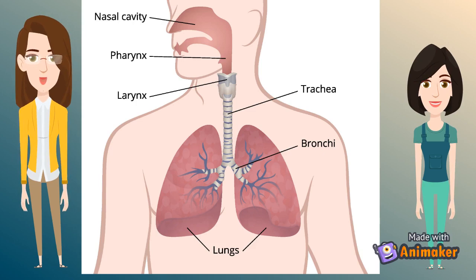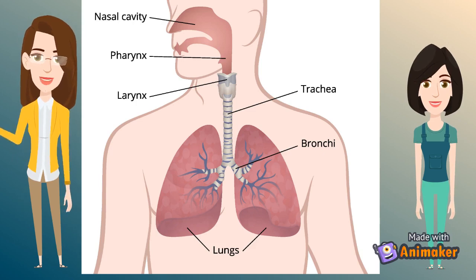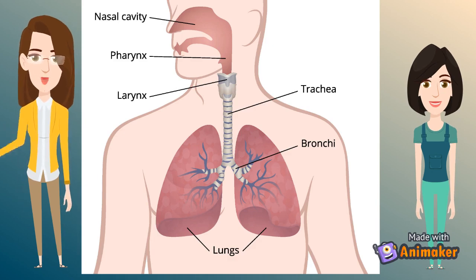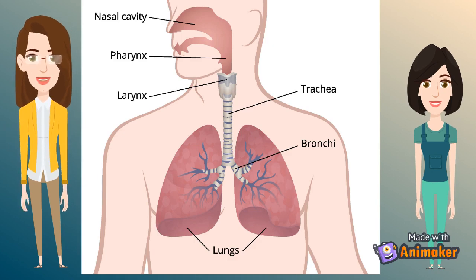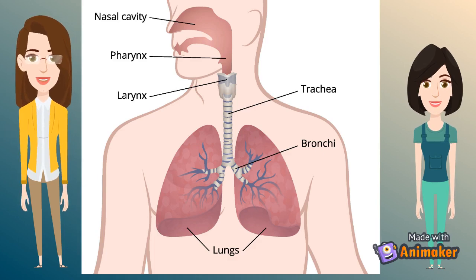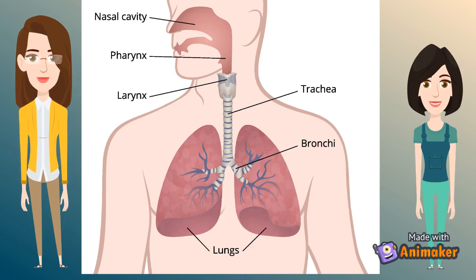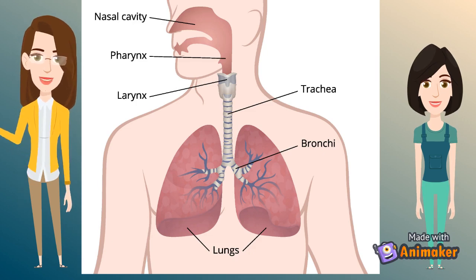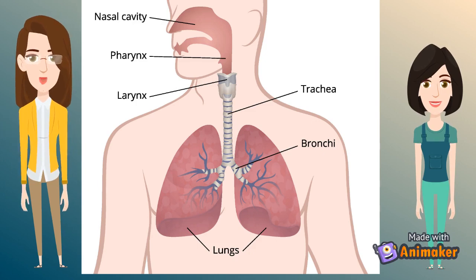The next part is the larynx. Two cartilaginous cords lay the framework of the larynx. It is found in front of the neck and is responsible for vocal function as well as aiding respiration. Hence, it is also informally called the voice box. When food is swallowed, the flap called the epiglottis folds over the top of the windpipe and prevents food from entering the larynx.